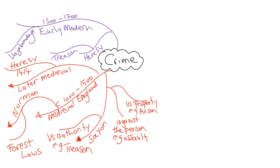You do see the emergence of witchcraft, with people being accused of being witches, encouraged by James I's book, Demonology, and by the Civil War. After the Civil War, you see Oliver Cromwell's moral laws in his attempt to make England a godly country.